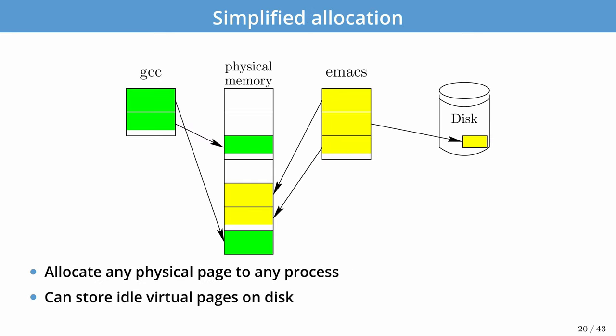With paging, GCC and Emacs segments are broken into uniform-size regions and mapped to arbitrary pages in physical memory — so GCC is no longer contiguous, with portions at low and high addresses. For Emacs, two pages might be in memory and one on disk. If the program accesses an address whose mapping is marked invalid by the OS, a fault is triggered; the OS handler reads the data from disk and loads it into physical memory. This allows idle pages to be stored and brought in only as needed, enabling larger programs in smaller machines.